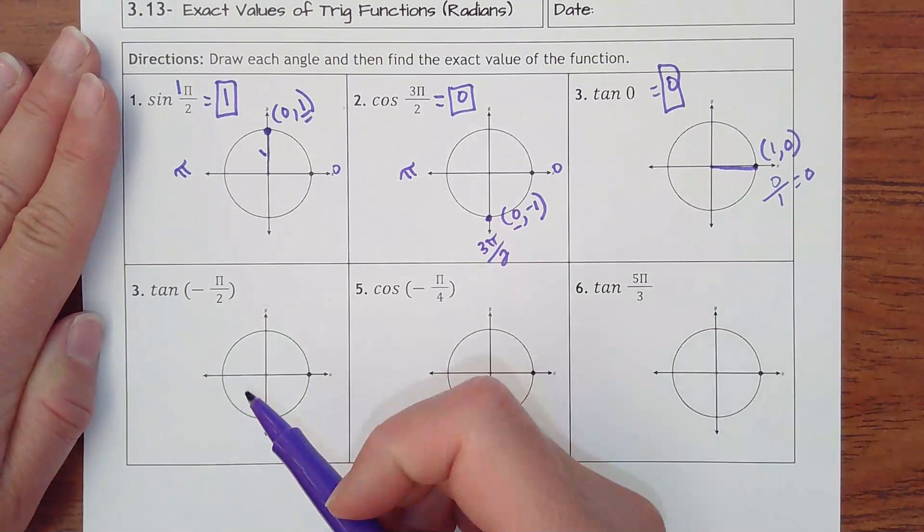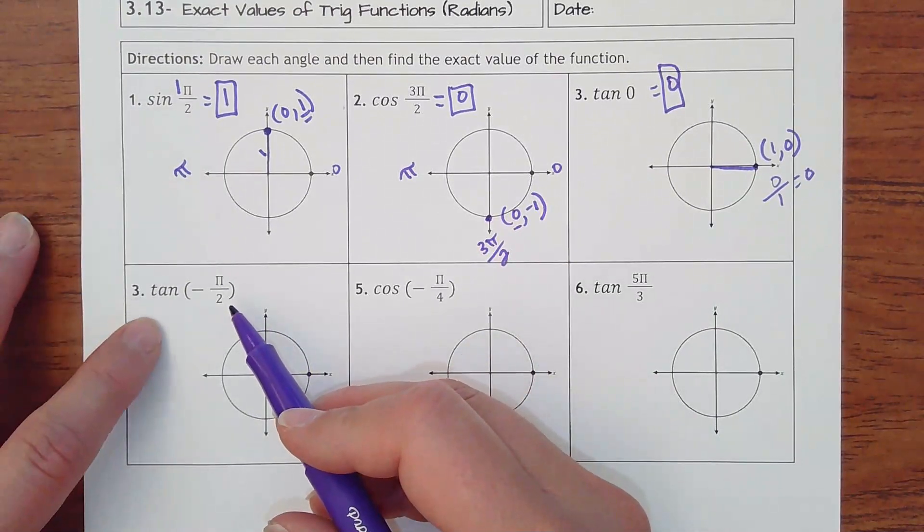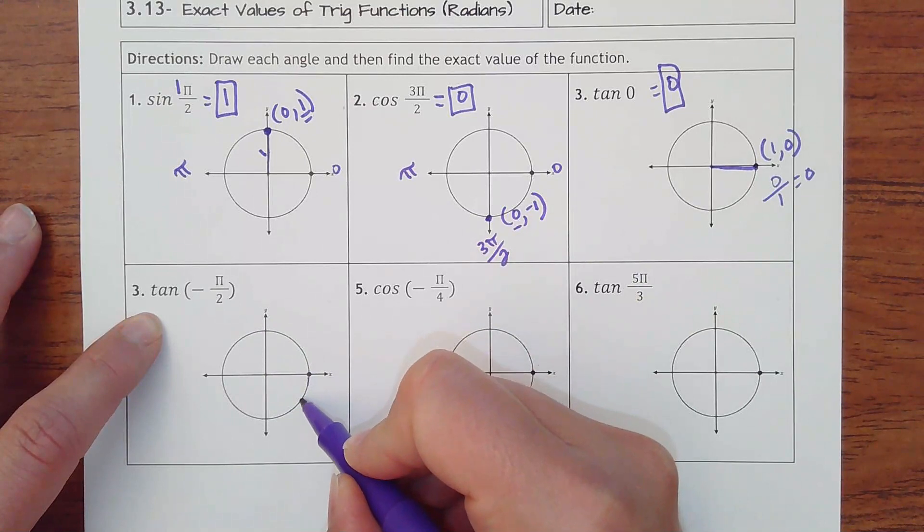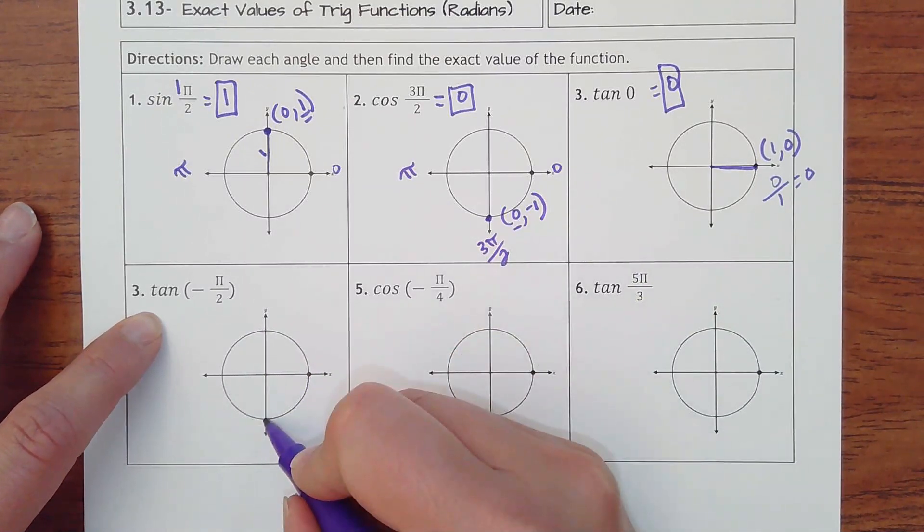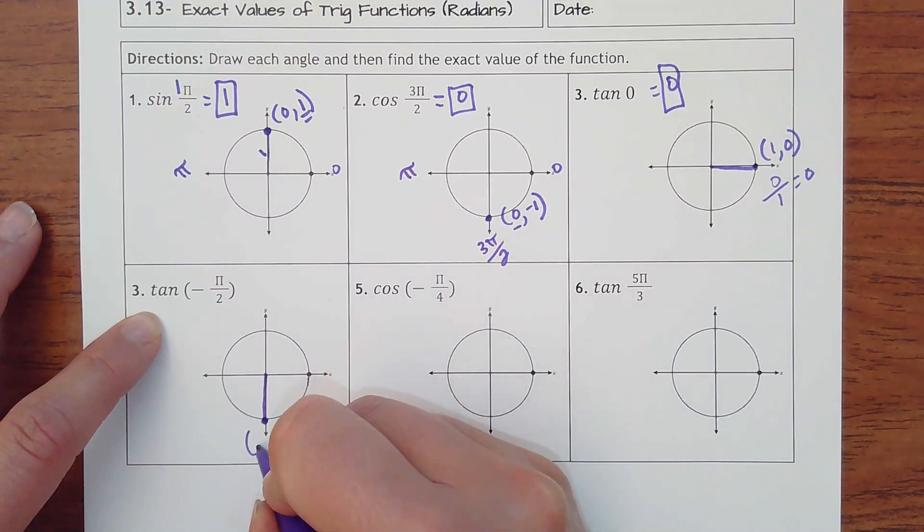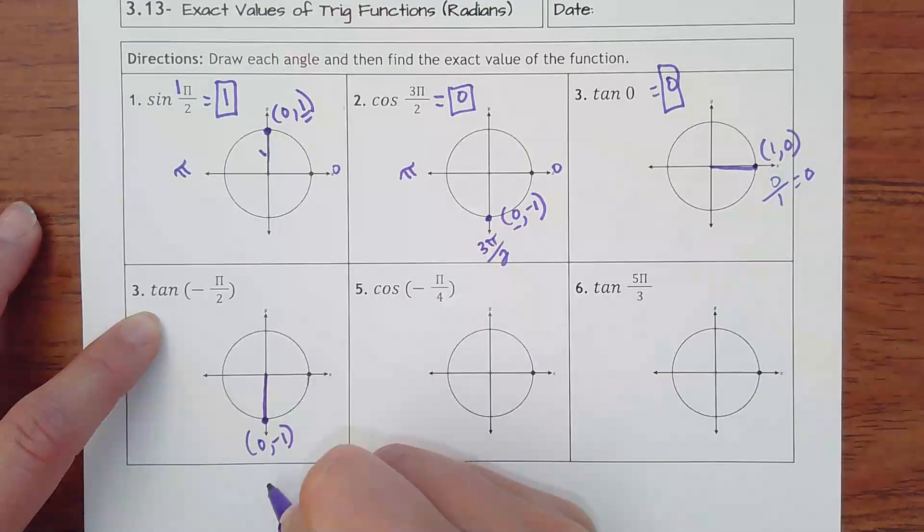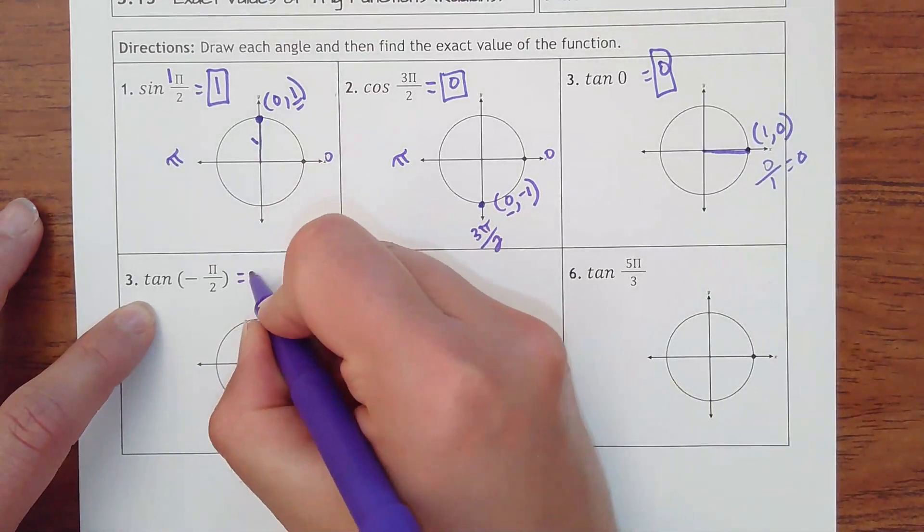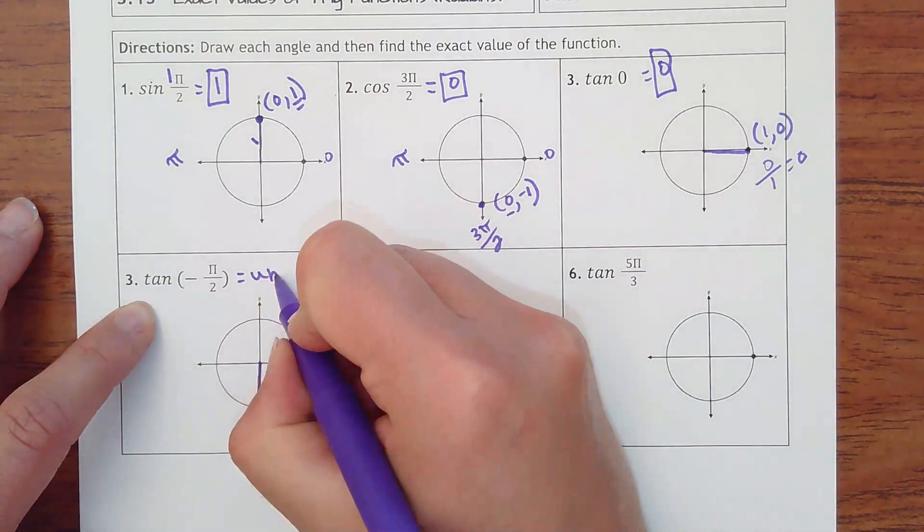And then number 3 is tangent of negative pi over 2. So negative half of pi would be going this way. So negative half of a semicircle would be here. And that ordered pair is 0, negative 1. So negative 1 divided by 0 can't happen. That is undefined, because vertical lines have undefined slope.